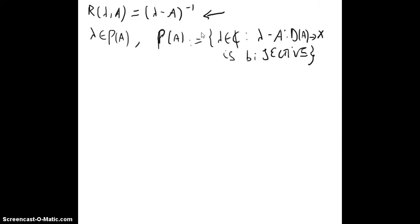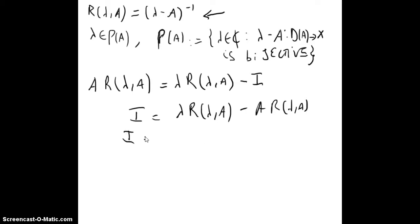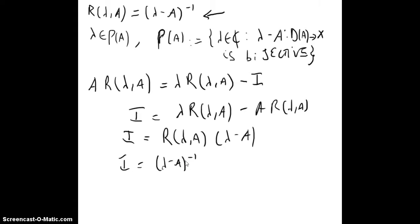From this definition, one can say that we have the equality: A R(lambda, A) is equal to lambda R(lambda, A) minus I. One can say this is because we can take the I to the other side and have lambda R(lambda, A) minus A R(lambda, A), and this is (lambda minus A) times (lambda minus A) inverse.